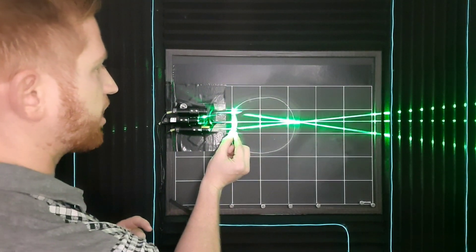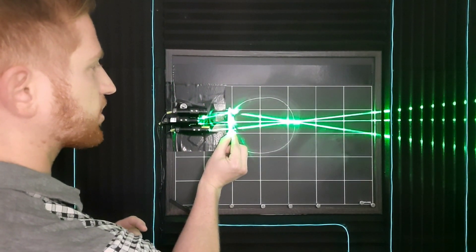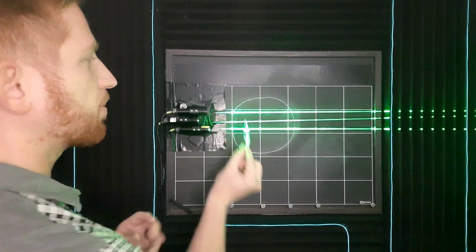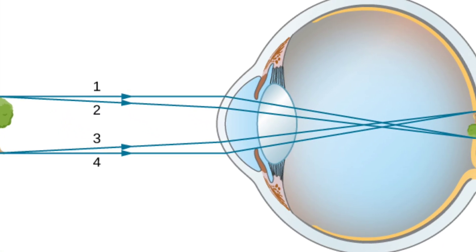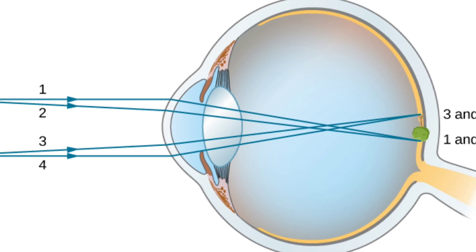This setup is how your eye images something very far away, like a star. However, for something that's up close, in reality, you're actually forming an upside-down image on your retina.